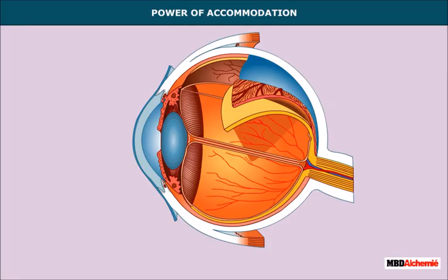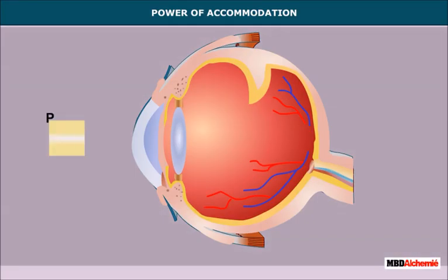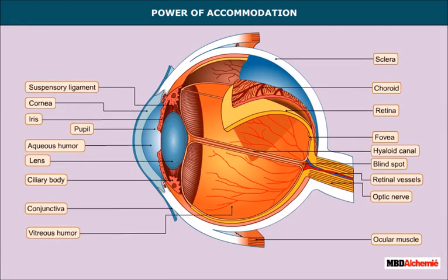The power of accommodation refers to the ability of the ciliary muscles to change the thickness of the lens, and hence its focal length, by contracting and expanding. This allows us to see both distant and nearby objects clearly. This adjusting action of the eye is known as the power of accommodation. The least distance at which an eye can see an object clearly is known as the near point, which is 25 centimeters.